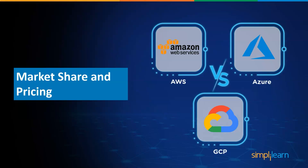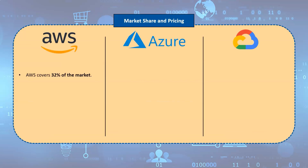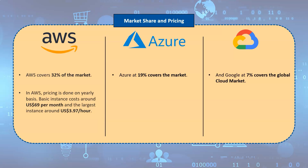Now let's move on to market share and pricing. All these cloud services are based on a comparative pricing strategy, meaning you pay based on usage. According to Canalys, the worldwide cloud market rose 35% to $41.8 billion in the first quarter of 2021. AWS accounts for 32% of the market, with Azure accounting for 19% and Google accounting for 7%. Amazon charges on a yearly basis, while Microsoft Azure and Google services charge on a per-minute basis.